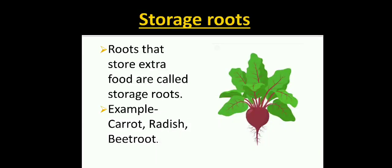Storage roots. Roots that store extra food are called storage roots. Example: carrot, radish, beetroot. In some plants like carrot and beetroot, the root stores excess food prepared by the plant, which swells up and becomes edible. The stored food is used by the plant later.